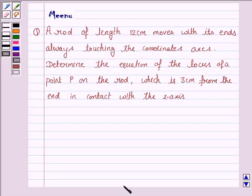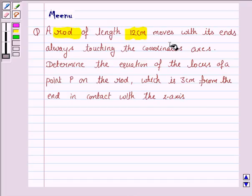Hello and welcome to the session. Let us discuss the following question. A rod of length 12 cm moves with its ends always touching the coordinate axis. Determine the equation of the locus of a point P on the rod which is 3 cm from the end in contact with the x axis.